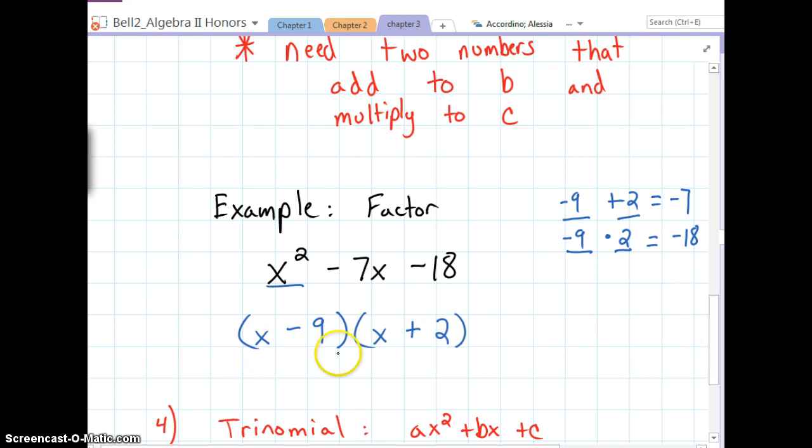If we multiply it back out, we get x times x, which is x squared. Negative 9x plus 2x is negative 7x. And negative 9 times 2 is negative 18.